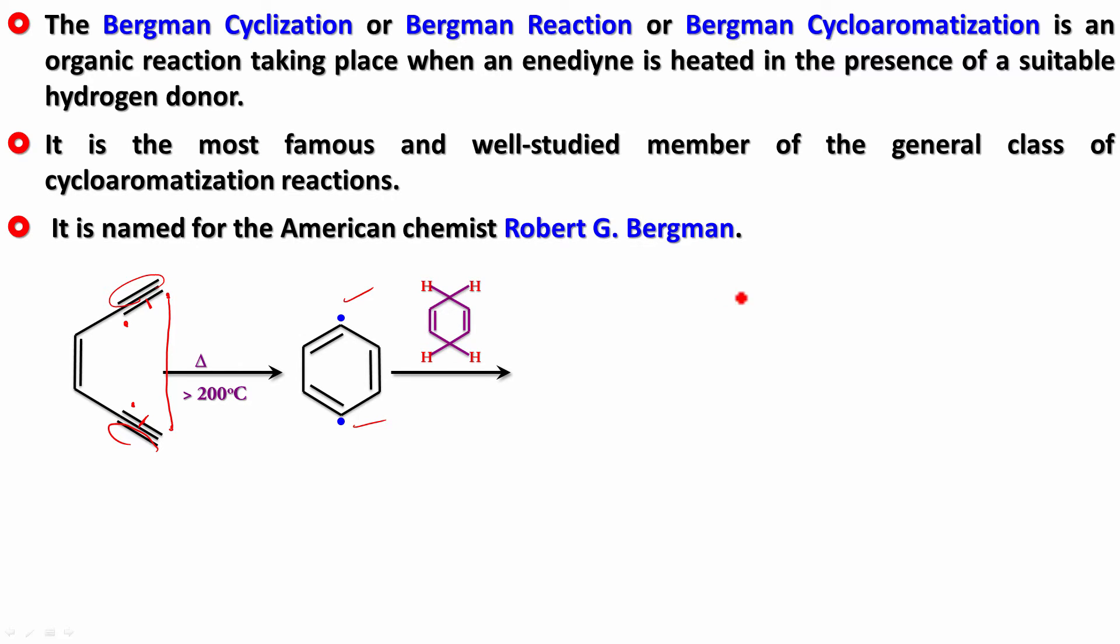This is a very good hydrogen donor. This is cyclohexa-1,4-diene. It is a very good hydrogen donor because once it donates a hydrogen atom and forms a radical, this carbon also donates a hydrogen and forms a radical.